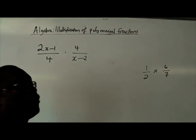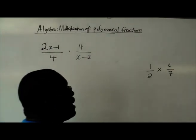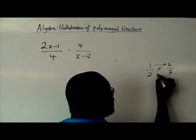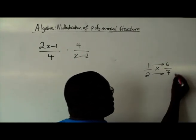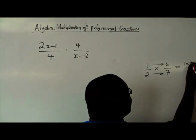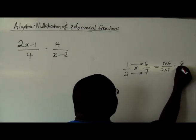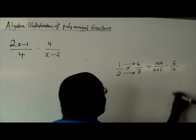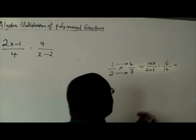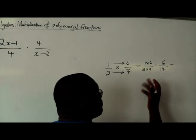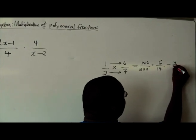So what you simply do is you multiply the numerator times the numerator and the denominator times the denominator such that you have 1 times 6 over 2 times 7 which will give you 6 over 14 which if you reduce it to its simplest terms would be 3 over 7.